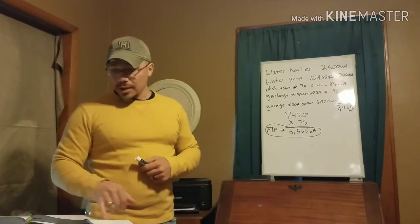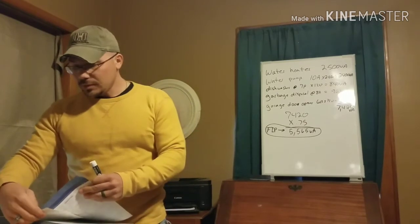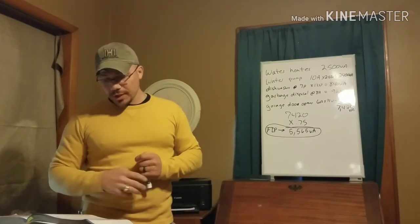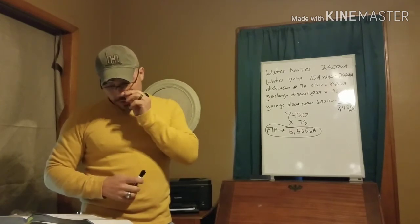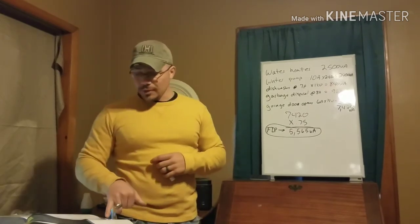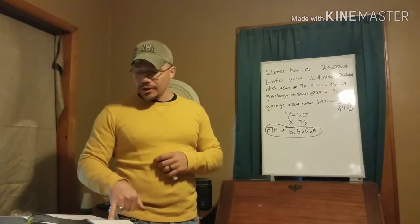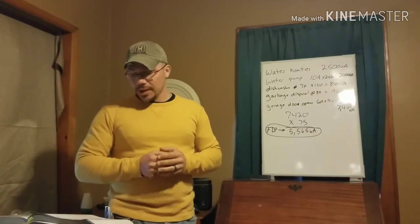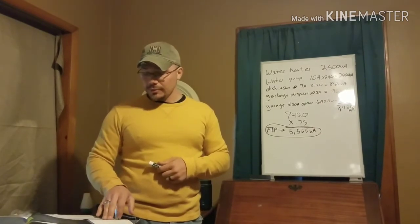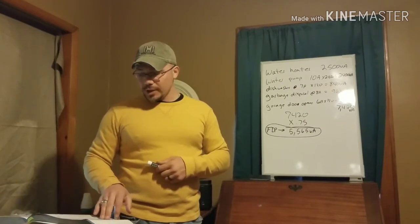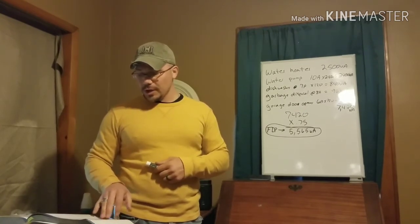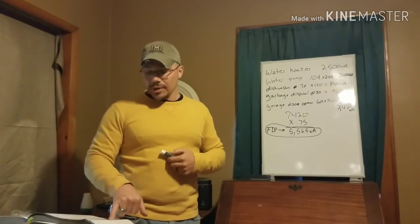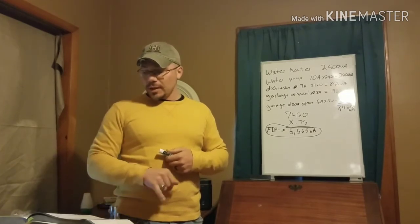Section 430.24, 'Several Motors or Motors and Other Loads,' states conductors supplying several motors or a motor and other loads shall have an ampacity not less than the sum of: (1) 125 percent of the full-load current rating of the highest-rated motor as determined by 430.6(A); (2) the sum of the full-load current ratings of all other motors in the group; (3) 100 percent of the non-continuous load; and (4) 125 percent of the continuous non-motor load.